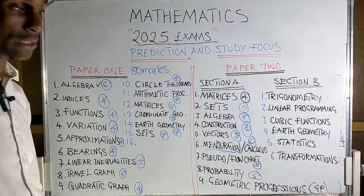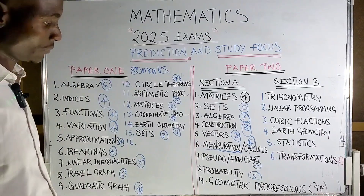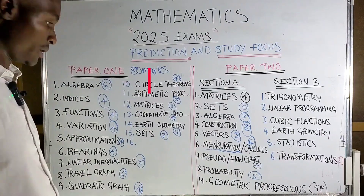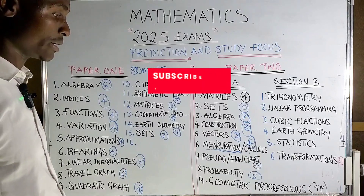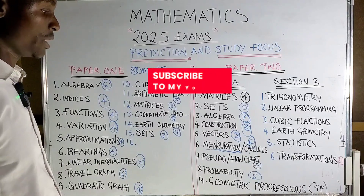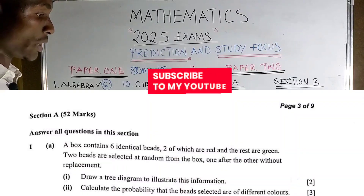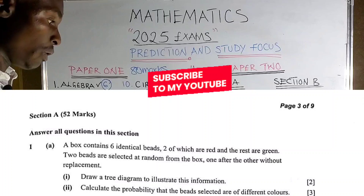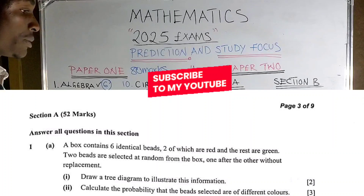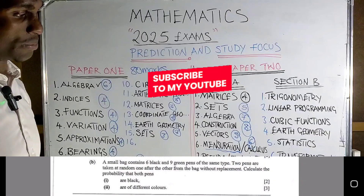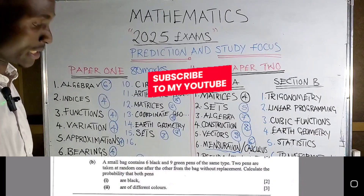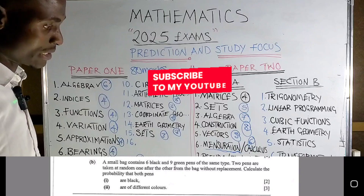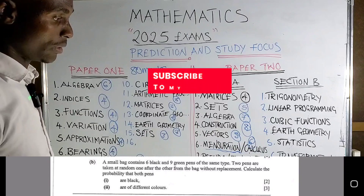Probability is five marks. You may be given a situation and asked to come up with a tree diagram, or just a situation where you calculate without a tree diagram. Both are simple.